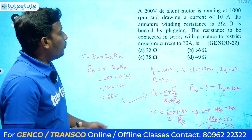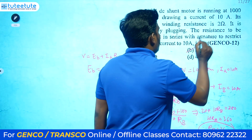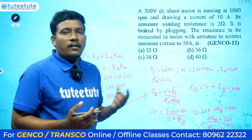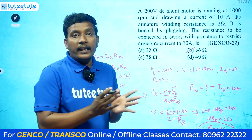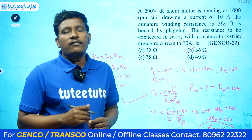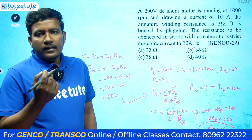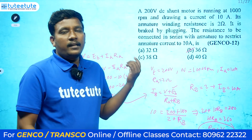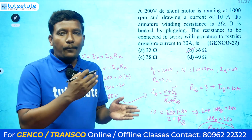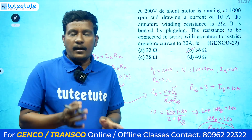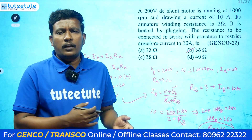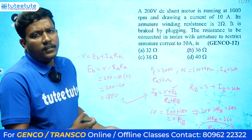Rb = 36 ohms, so the answer is option B. Don't panic with lengthy problems — the solution is usually straightforward. Just note down the given data, identify the process being done to the motor, remember the relevant formula, substitute the values, and you'll get the required answer.